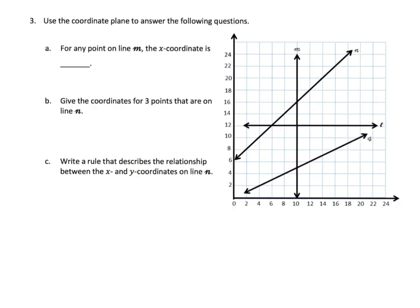Now we have a big graph with multiple lines and we're working backwards — instead of plotting points, we're reading from the graph. For any point on line m, the x coordinate is always 10. You can see right on the graph that the x value never changes; it's the y value that changes along line m.